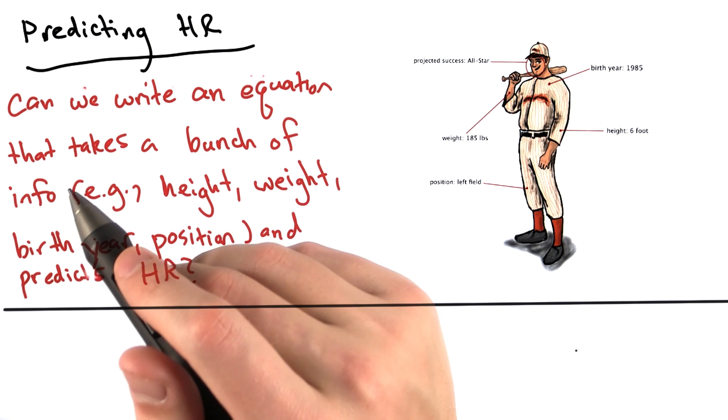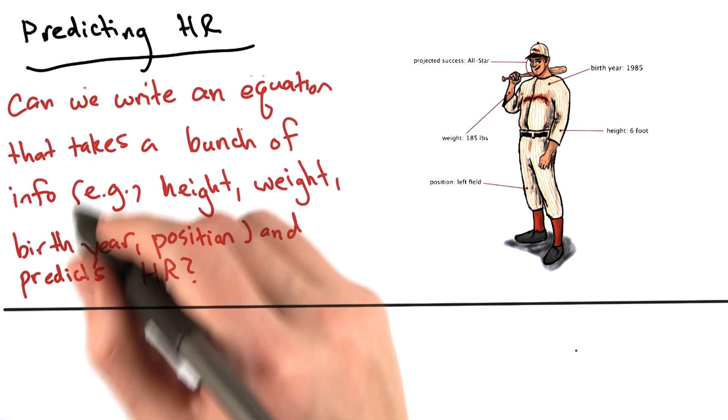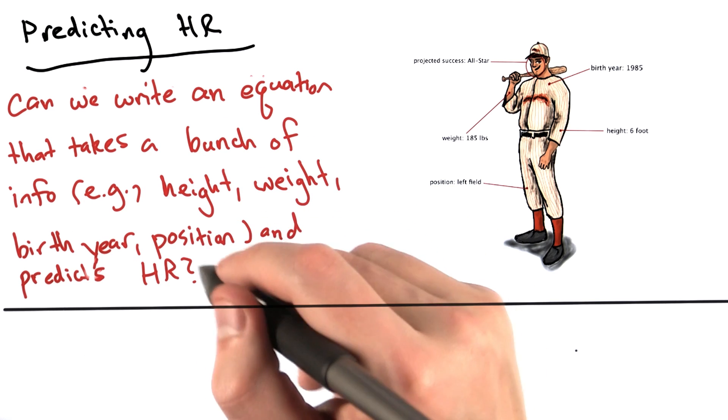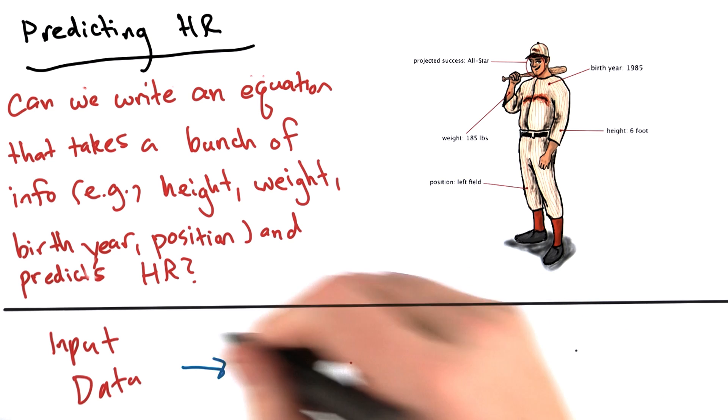To do this, we want to write an algorithm that does the following. Takes in the data points for which we have all these input attributes and the player's lifetime number of home runs. Then builds the most accurate equation to predict lifetime number of home runs using these input variables.